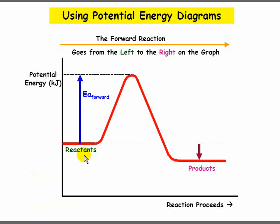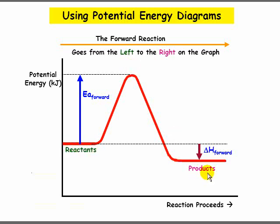The difference in energy between the reactants and the products — the net difference from the very beginning to the very end — we call the enthalpy change, or delta H. Notice in this case that the enthalpy, or potential energy, is going down. This is called delta H forward because it deals with the forward reaction, going from reactants to products.